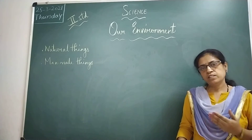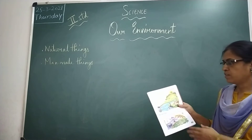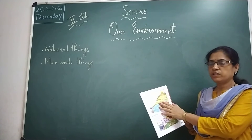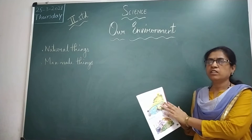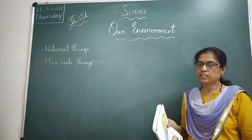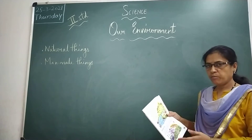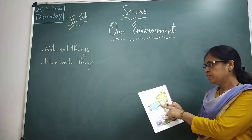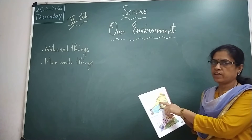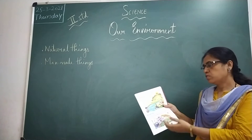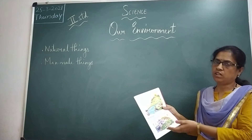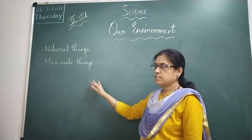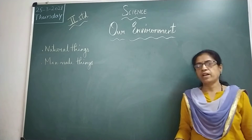You can see the picture. So what are natural things? Things that are given to us by nature are called natural things. They can be living or non-living. Living natural things include plants, animals, birds, and humans, whereas sun, mountain, soil, air, and water are non-living natural things.